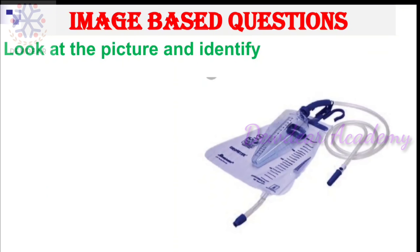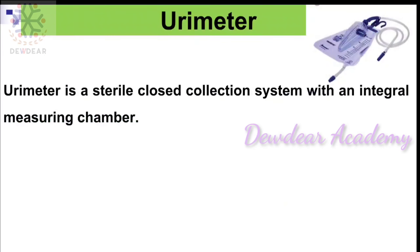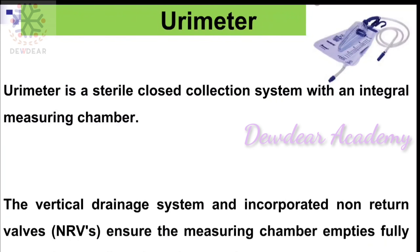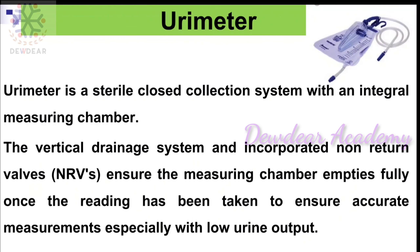Next question: look at the picture and identify the device. The answer is urometer. A urometer is a sterile closed collection system with an integral measuring chamber. The vertical drainage system and incorporated non-return valves ensure the measuring chamber empties fully once the reading has been taken, to ensure accurate measurements especially with low urine output.